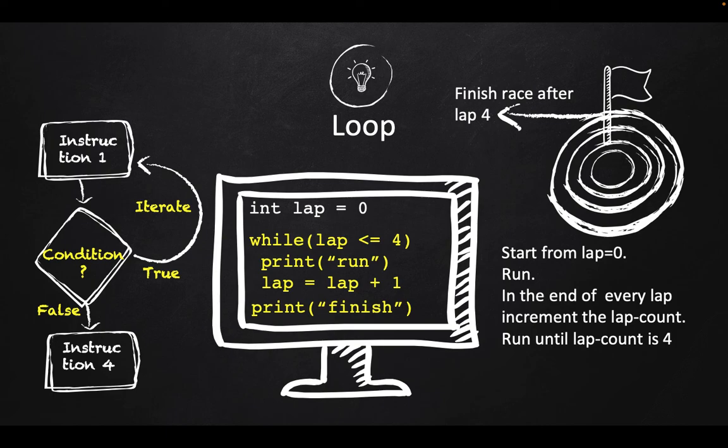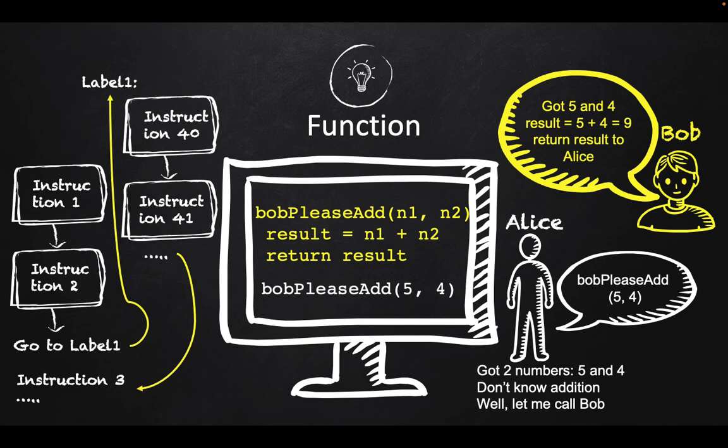And there we will do lots of hands-on examples also. There is another different type of control structure which is called function in a program, where you can offload some of the workload from one part of the program to another part of the program.